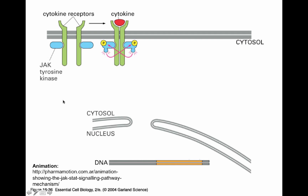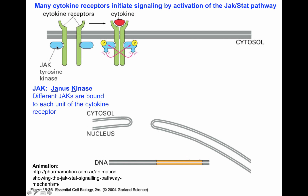Cytokine receptors are receptors that bind small protein ligands called cytokines — you can think of cytokines as the hormones of the immune system. The receptors are usually dimeric, as shown in this cartoon. They are very similar to receptor tyrosine kinase, except that the kinase domain is mediated by an independent protein called JAK, for Janus kinase. The Janus kinase is an independent kinase domain that associates noncovalently to the cytokine receptors.